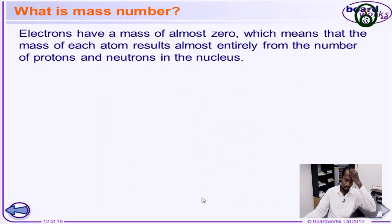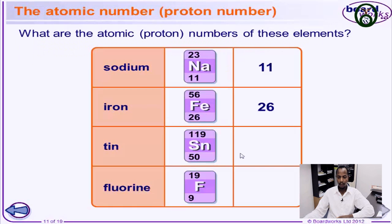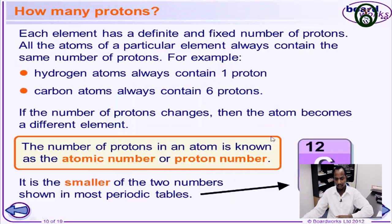Now let's move on to the mass number. We understood the atomic number using two concepts to explain the atom. If you look at this carbon atom, the bottom left number is the atomic number, which is the number of protons. And we said the top number, which is 12 in this case, is the mass number.